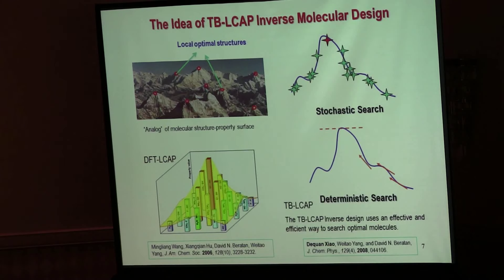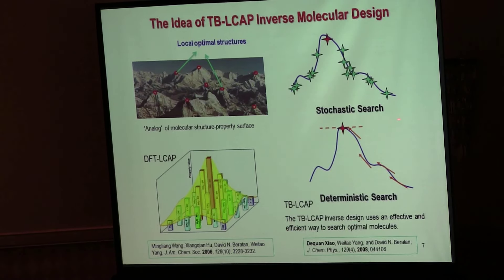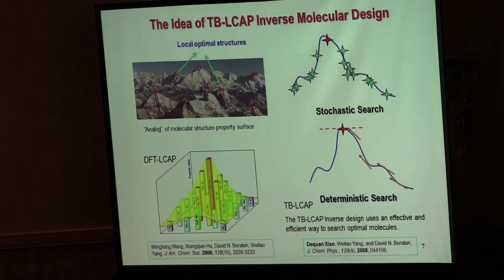When we worked on the project for molecular design of nonlinear optical materials, we came up with the idea of using the gradient of the property with respect to the structure. That way, you always have guidance pointing you to the top of the mountain. When you reach the top of the mountain, the gradient will be zero and you stop there. We call this version 'linear combination of atomic potential' and we call it inverse molecular design because we identify the optimum point first and then map out the structure — the inverse of the usual approach.